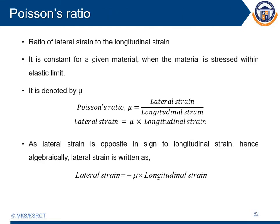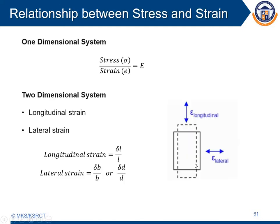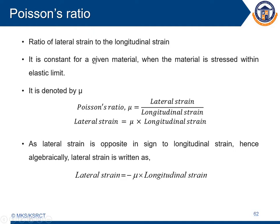Poisson's ratio is the key term that relates the relationship between the longitudinal strain and lateral strain. Poisson's ratio is the ratio of lateral strain to longitudinal strain — the strain taking place in the direction perpendicular to the applied force divided by the strain in the direction of the applied load. It is a constant, and for most engineering materials the Poisson's ratio will be a maximum of 0.3. It is usually denoted by the symbol mu. Poisson's ratio equals lateral strain divided by longitudinal strain.